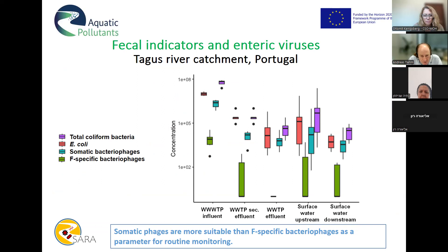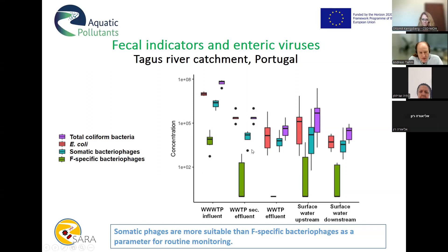I start with some virus data. This is an example for the Tagus River catchment in Portugal, showing data for total coliform bacteria, E. coli, somatic bacteriophages, and F-specific bacteriophages as indicator viruses. Samples were taken from the wastewater treatment plant influent, secondary effluent, final effluent, and surface water upstream and downstream. You can see immediately that somatic phages are detected in much higher numbers compared to F-specific bacteriophages.